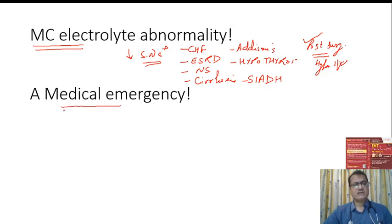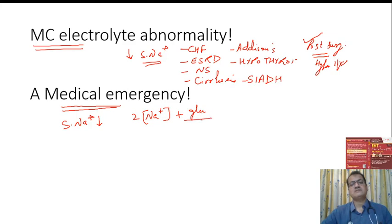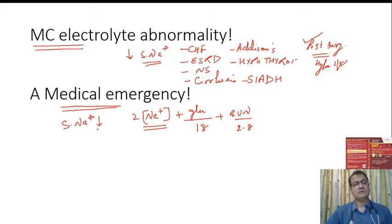Hyponatremia is a medical emergency because sodium is the principal determinant of plasma osmolality. The formula to calculate plasma osmolality is: 2 × sodium concentration + glucose (mg/dL) ÷ 18 + blood urea nitrogen (mg/dL) ÷ 2.8. With hyponatremia, plasma osmolality goes low, and therefore hyponatremia is often a hypo-osmolar state.